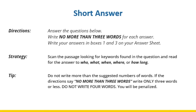Now we are going to review our next strategy: short answer questions. In the IELTS test, you'll be asked to answer questions and write no more than three words for each answer. First, scan the passage looking for keywords found in the question, and pay attention to how the question begins — words like who, what, when, where, and how long can help you determine what kind of information to look for. Most importantly, do not write more than the suggested number of words. If the directions say no more than three words, write only three or fewer. Writing four words will result in a penalty.